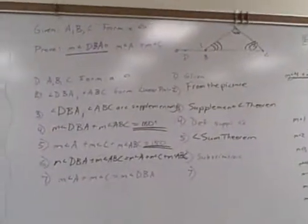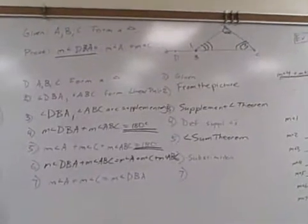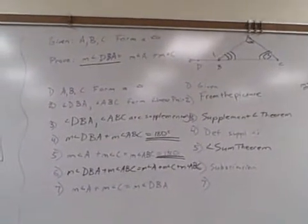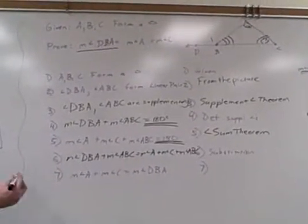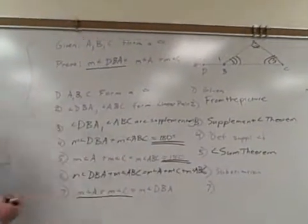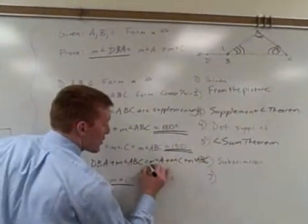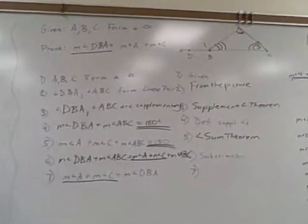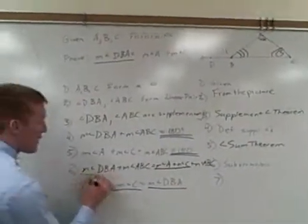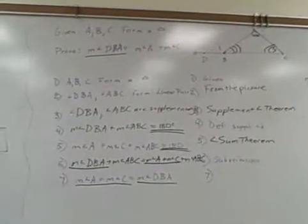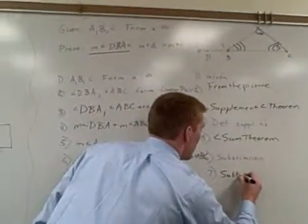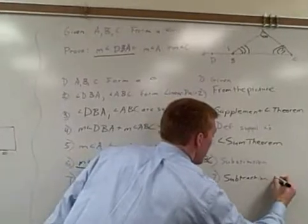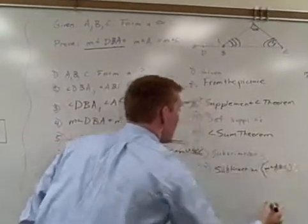Now the last one is what my kids have been having a real hard time with all day — trying to figure out how I got from step 6 to step 7. What I recommend is underlining what you have in step 7, going back into step 6, and underlining what is the same. You've got measure of angle DBA here and there, and you've got angle ABC on both sides. So we use the subtraction property — subtracting measure of angle ABC. Good work.